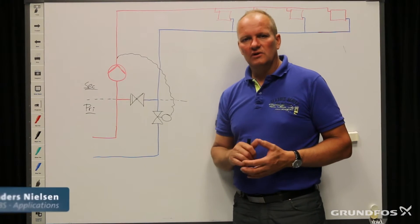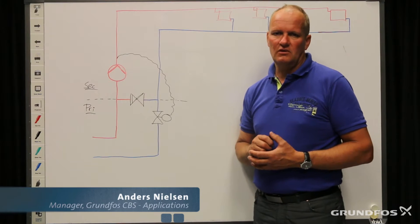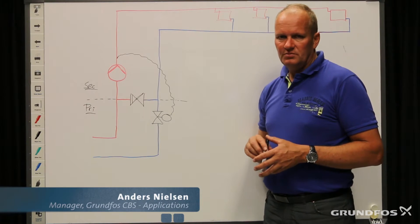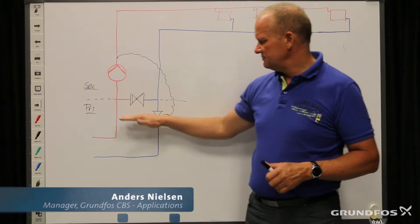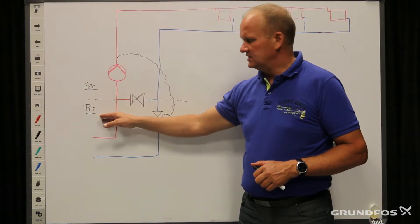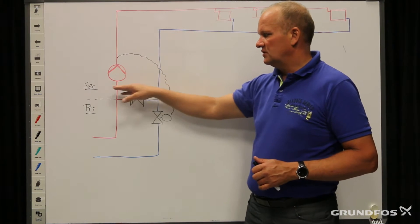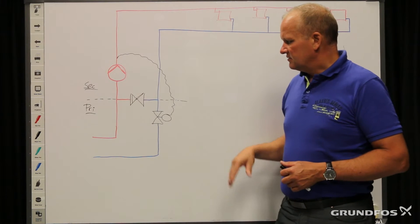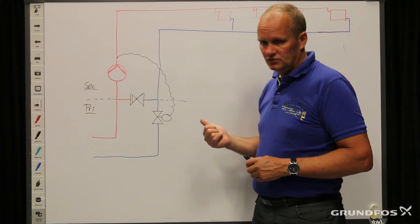The application we will take a closer look at right now is what we call a mixing loop. A mixing loop is a system where we have one set of temperature on the side which we call the primary side and another set of temperature on the secondary side.